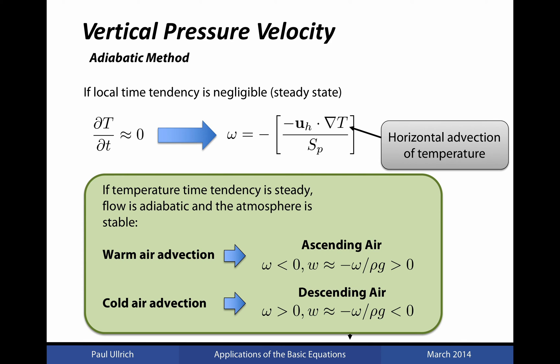If the atmosphere is stable, the stability parameter is positive. Consider the two types of temperature advection. If we have warm air advection, omega is negative, and W (≈ −ω/ρg) is positive, so warm air advection corresponds to ascending air. This makes sense: warm air moving into a region increases the temperature, causing the layer thickness to increase, pushing the geopotential surface upward, associated with ascending air. On the other hand, cold air advection brings colder air into a region, leading to a thinner fluid column, which pulls the geopotential surface downward, leading to descending air.